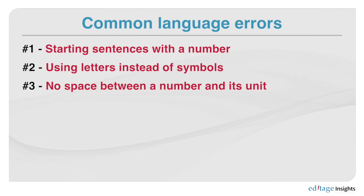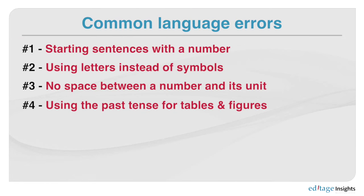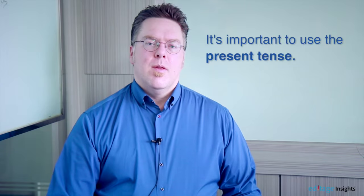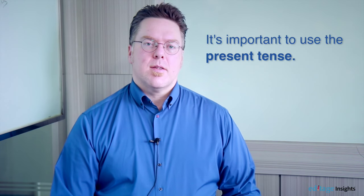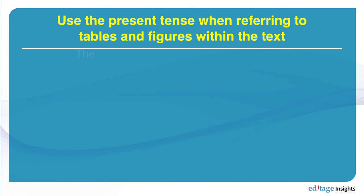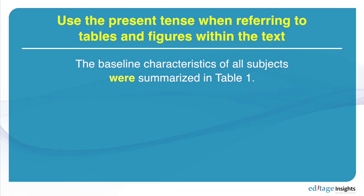Mistake number four deals with the use of location statements in the text. When giving statements, when talking about tables and figures in the text, it's important to use the present tense. If I were to say 'the baseline characteristics of all subjects were summarized in table one,' using the past tense there would look strange — it would mean that possibly table one is going to change.